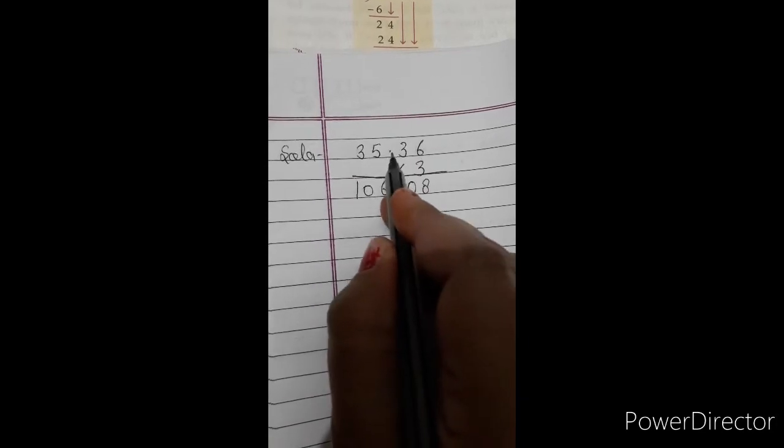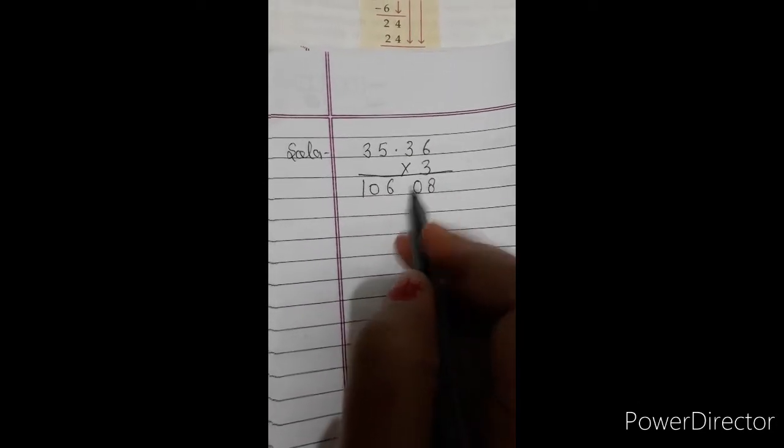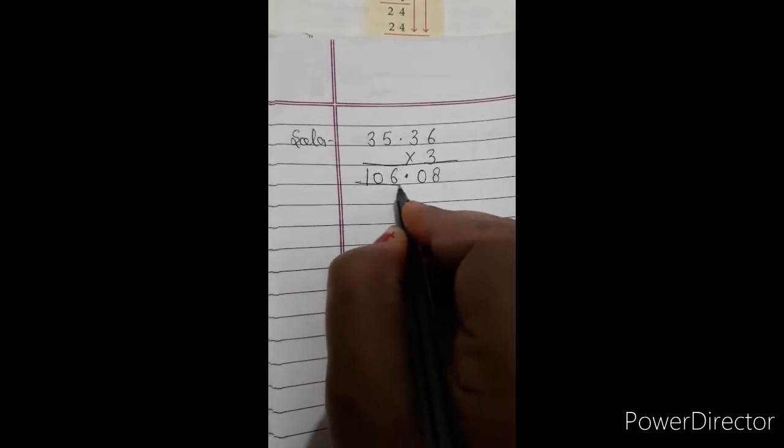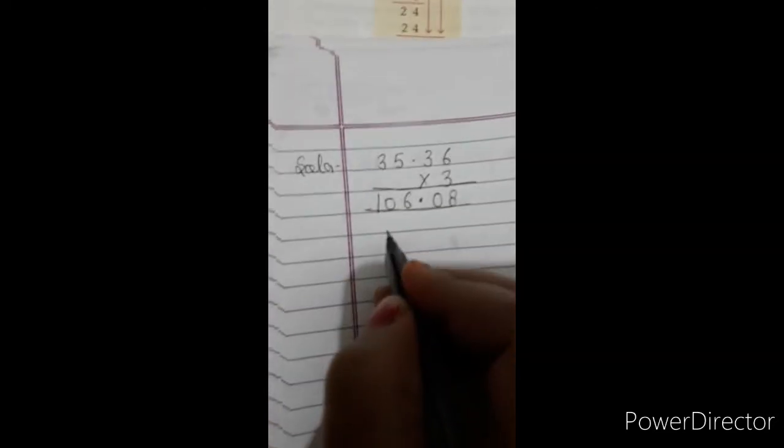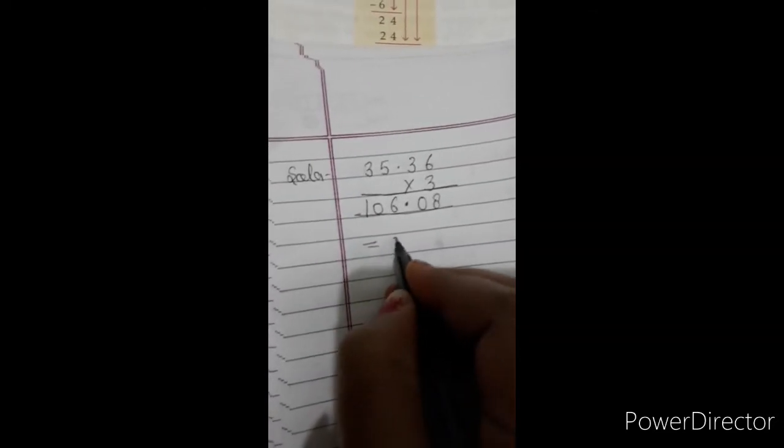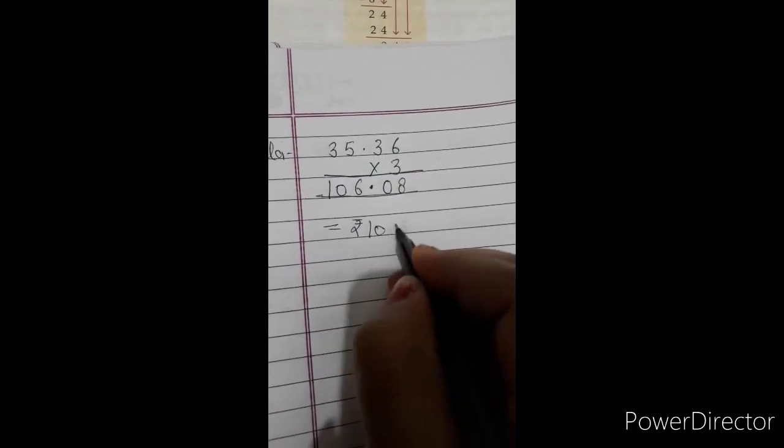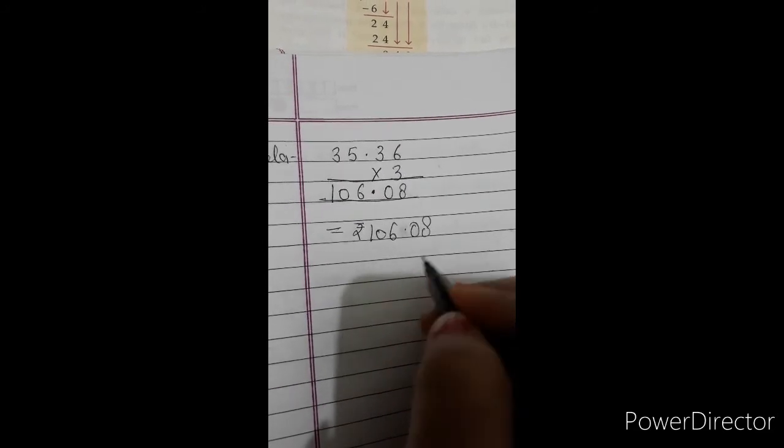इसमें हम अपना decimal point जितने अंकों के बाद होता है, वहीं अपने answer में लगा देते हैं. So this is our answer. Means, rupees 106 and 8 paise.